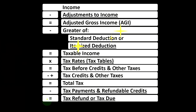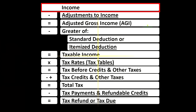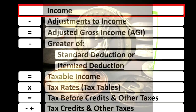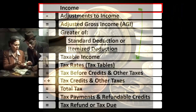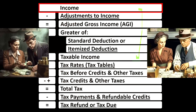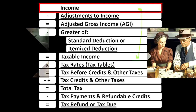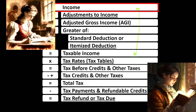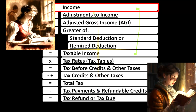Looking at the income tax formula, we're focused on line one income. The first half of the income tax formula is essentially an income statement, just an outline with other forms and schedules flowing into these line items — one of those being Schedule C, which has business income minus business expenses, giving us the business net income.